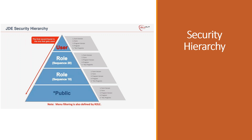So security hierarchy — here's a screenshot, and this is how the system determines security. The first record found is the one that the user gets, and once that is found, the system stops searching for lower priority records.